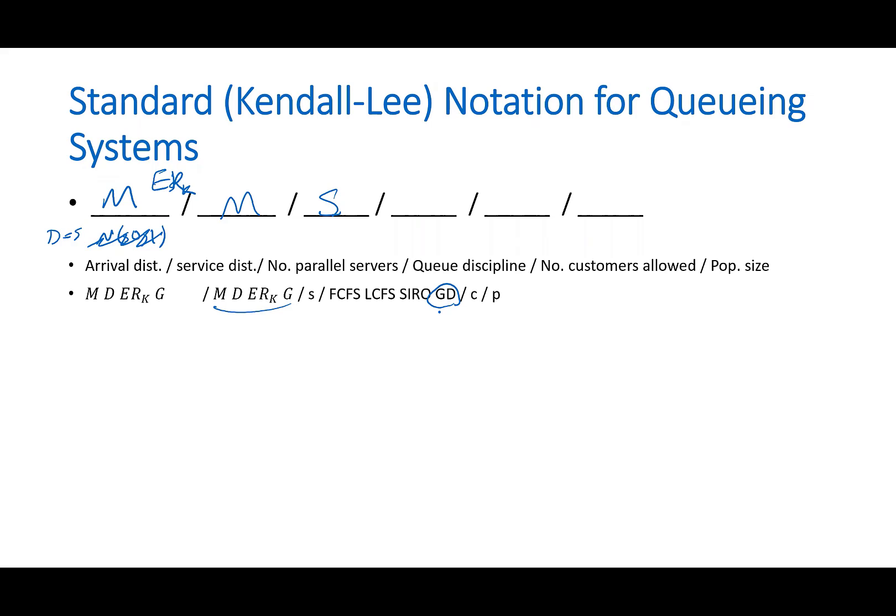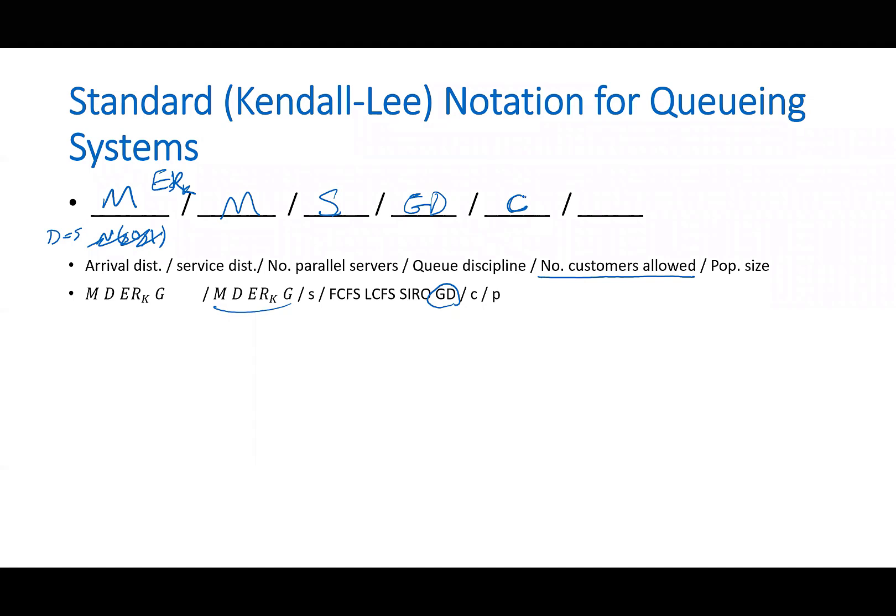And then there is a capacity. We usually put G here, which means it has a general distribution, GD. And then we put a C here, which is the capacity of the system. For example, if it's 10, once there are 10 people in the system, including in the line and being served, we close the doors, we do not let anyone in.